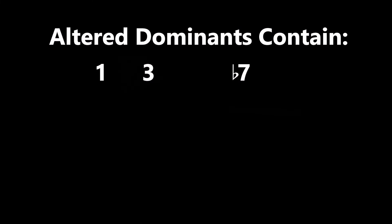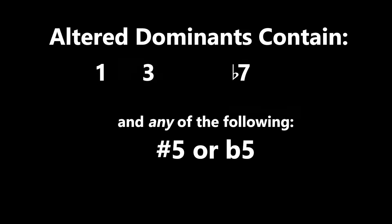We only talked about the very basics of altered dominant chords today, but here's a basic definition of all altered dominant chords. They all contain 1, 3, and flat 7. If they have chromatic neighbors to the fifth, it's an altered dominant. Or if they have chromatic neighbors to the ninth, it's an altered dominant chord. And if you go through all the octaves and enharmonics, you realize that the chromatic neighbors of the ninth are actually your minor third and your flatted second — so yes, it gets really confusing. But working with the basic altered dominant chords gives you a good idea of why they're important and how to start using them.